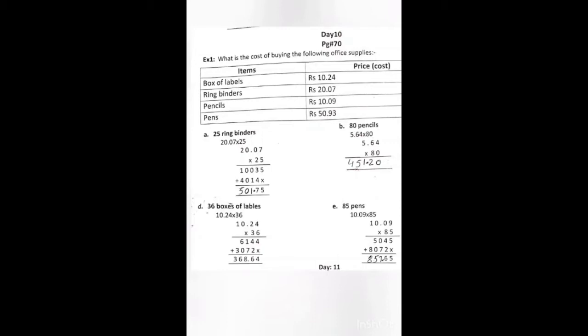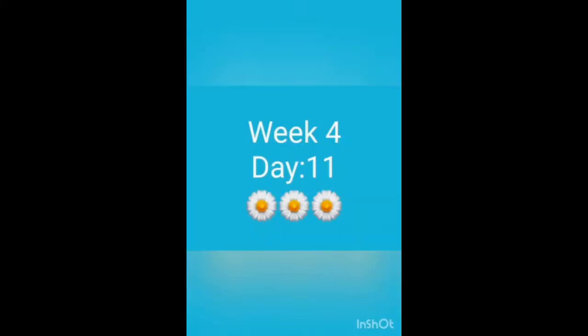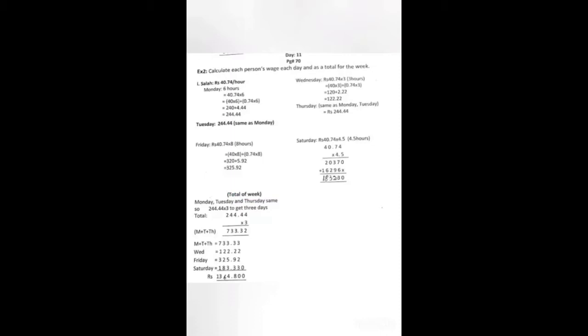Now students, week 4, day 11. It's page number 70. In this exercise we have to find out the total income of Tala if he earns 40.74 rupees per hour. On Monday he works 6 hours, so we will multiply 40.74 by 6.